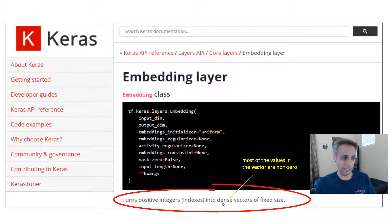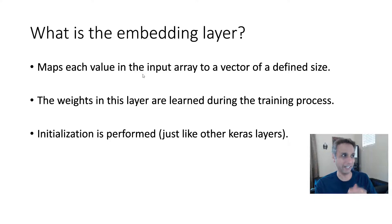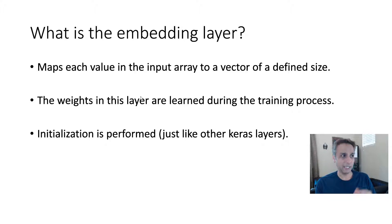So that's what that summary means — it turns positive integers into dense vectors. Now, what is the embedding layer? It maps each value in the input array to a vector of a defined size. The weights in this layer are learned during the training process.